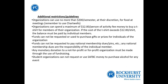Here are some additional restrictions and guidelines. Organizations can use no more than $200 per semester at their discretion for food at meetings, and this is for organizations that do not have membership requirements. Organizations can spend no more than $12 per person to buy t-shirts for their members. So if an open organization wants to buy sweatshirts that cost $24, $12 of the student activity fee money could go towards those, and the individual could contribute $12 individually. Funds cannot be requested or used to purchase gifts or prizes for individuals. Funds cannot be requested to pay national dues, pins, or graduation stoles — those need to be individually purchased or fundraised.